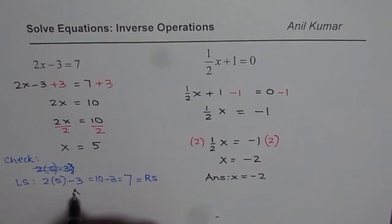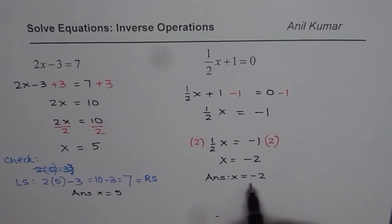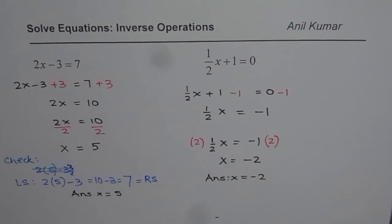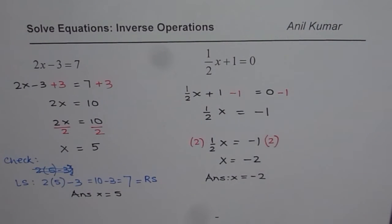In the previous case our answer was x equals 5. Now as an exercise you can check if minus 2 works as a solution or not. Minus 2 divided by 2 is minus 1. Minus 1 plus 1 is 0. So it works. I hope the steps are absolutely clear.